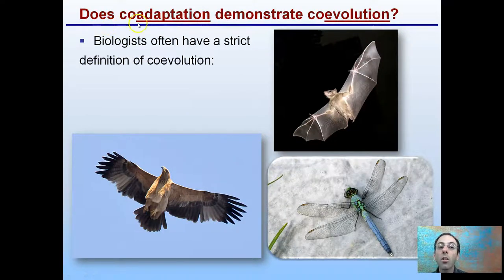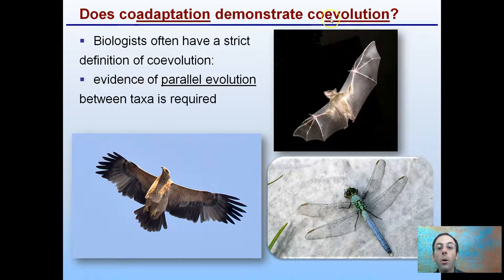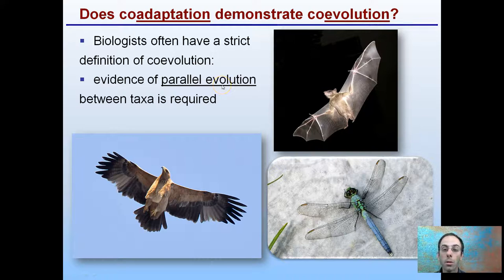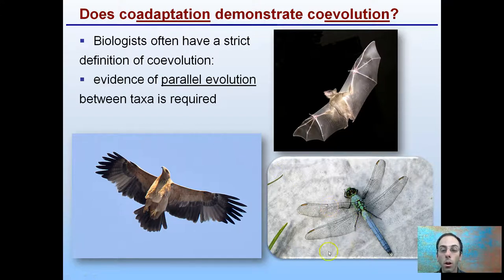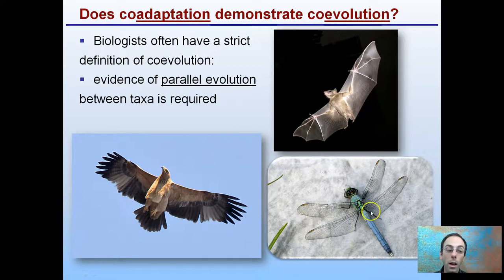So how does coadaptation demonstrate coevolution? Biologists have a strict definition for coevolution: parallel evolution between taxa is required. We have the example of the hawk, the bat, and the dragonfly all having developed some form of flight — this is looking at parallel evolution. They're all developing the ability to fly.